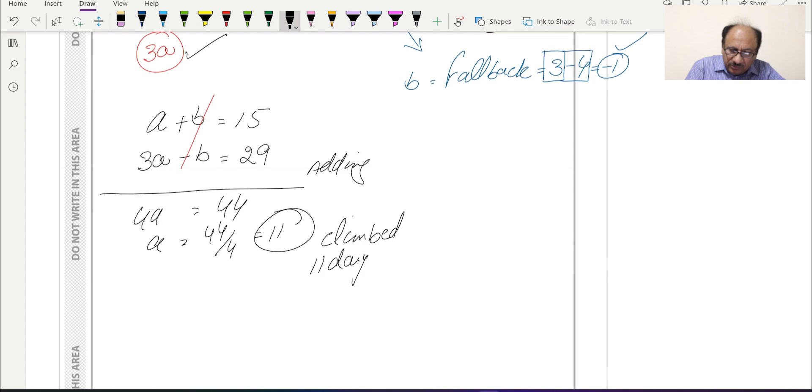Now we can use any of these two equations and replace value of 'a' to get value of 'b'. I will replace in the first equation: a plus b equals 15, so 11 plus b equals 15, b equals 15 minus 11, which equals 4.